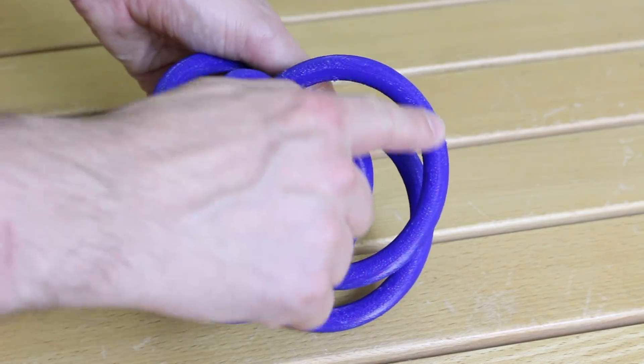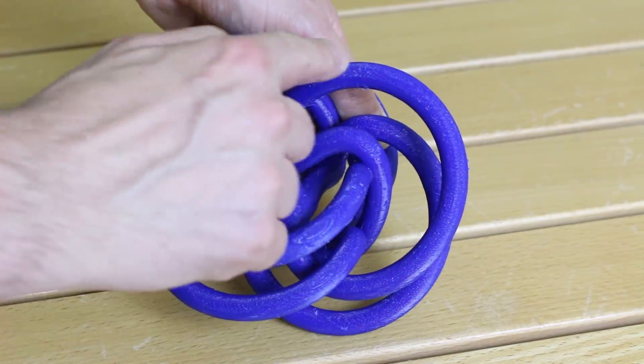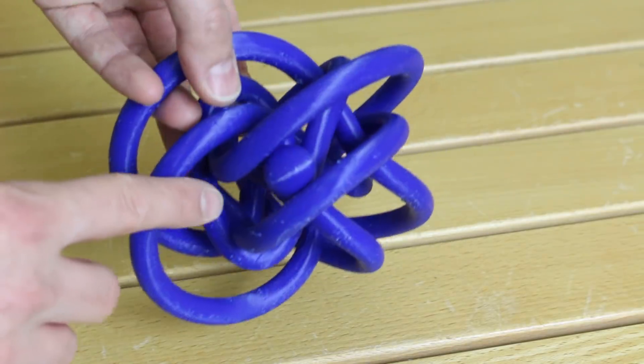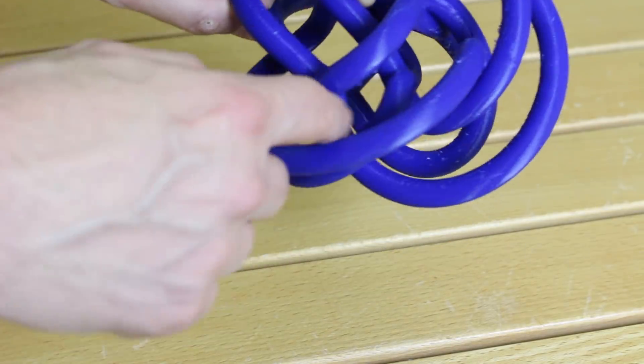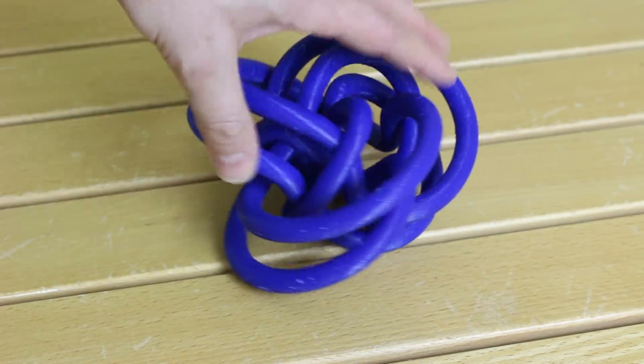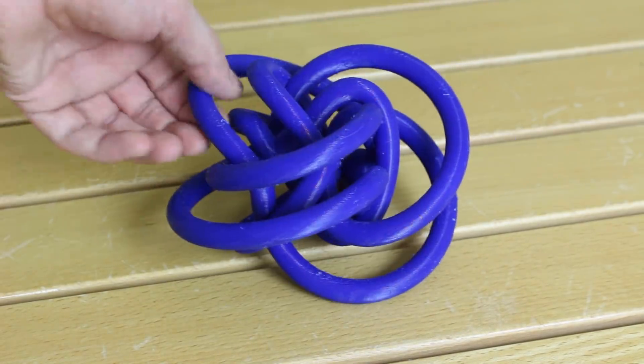There are some slightly less glossy patches on the bottom where the support has been compared to the top surfaces. But on the whole, that's come out really well. And you can see the ball is trapped in there and it goes all the way around as well. And that was obviously printed into the model in one piece. So yeah, pretty happy with that.